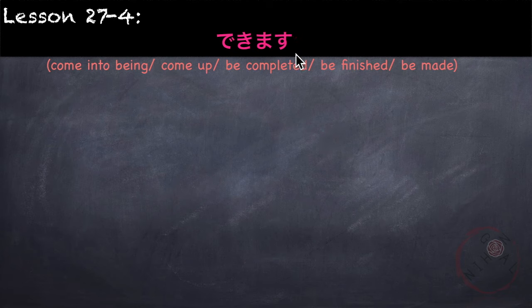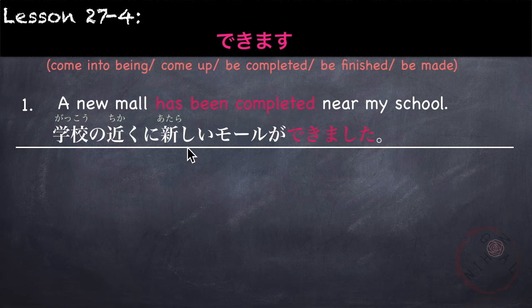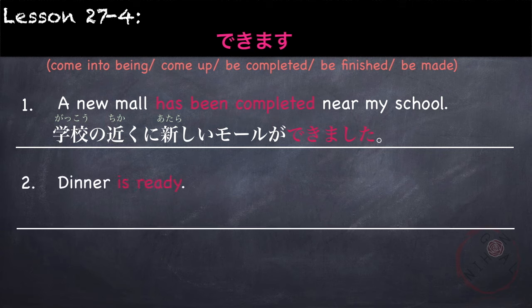Next is できます. We first learned about できます in lesson 18, meaning 'to be able to' or 'can.' Here we learn another meaning: come into being, come up, be completed, be finished, or be made. For example: A new mall has been completed near my school — 学校の近くに 新しいモールが できました。Another example: Dinner is ready — ばんごはんが できました。